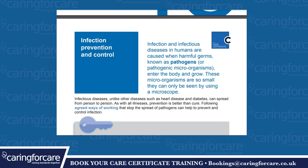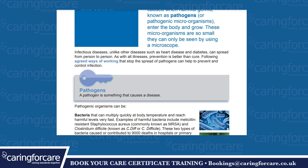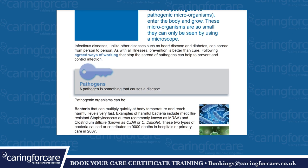Infection and infectious diseases in humans are caused when harmful germs known as pathogens or pathogenic microorganisms enter the body and grow. These microorganisms are so small they can only be seen using a microscope. Infectious diseases, unlike other diseases such as heart disease and diabetes, can spread from person to person. As with all illnesses, prevention is better than cure. Following agreed ways of working that stop the spread of pathogens can help prevent and control infection.